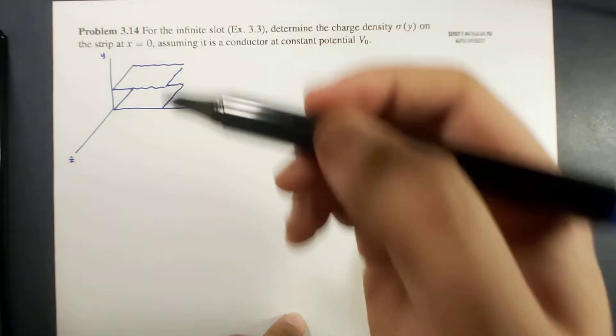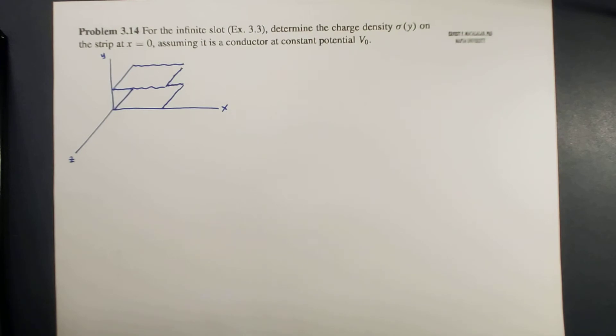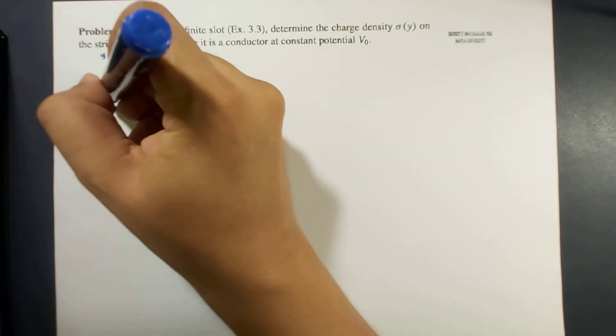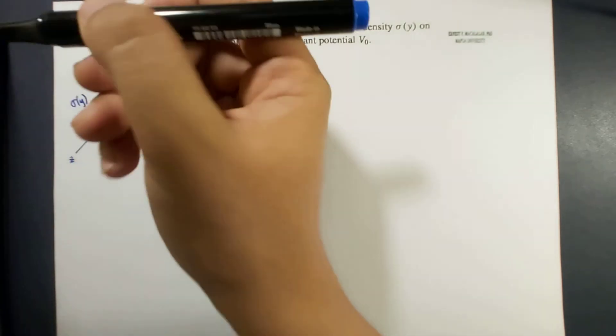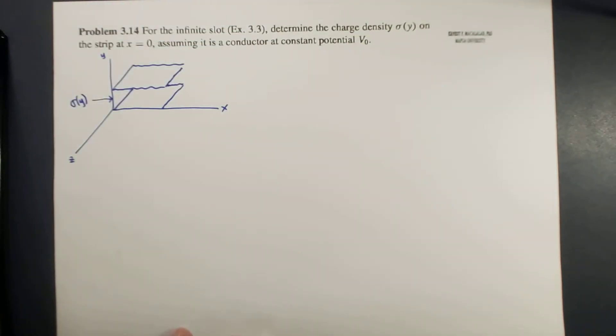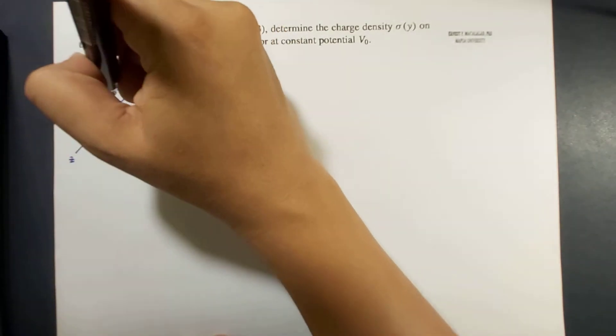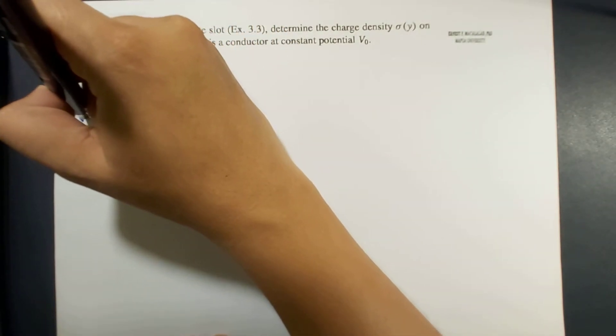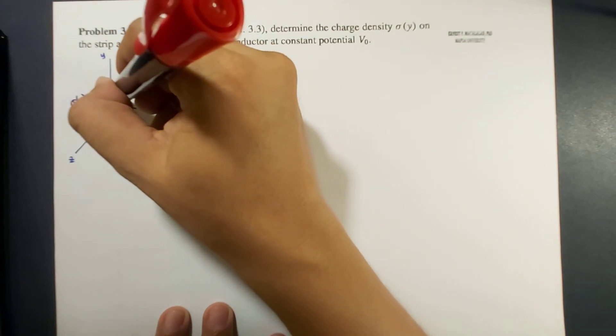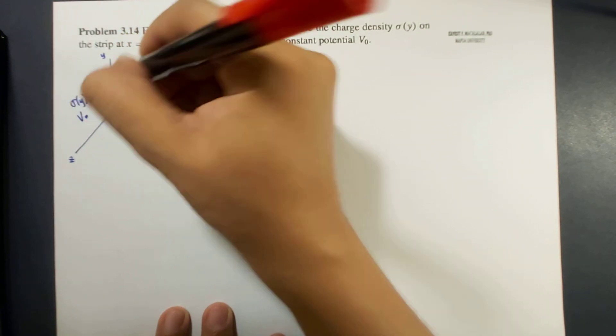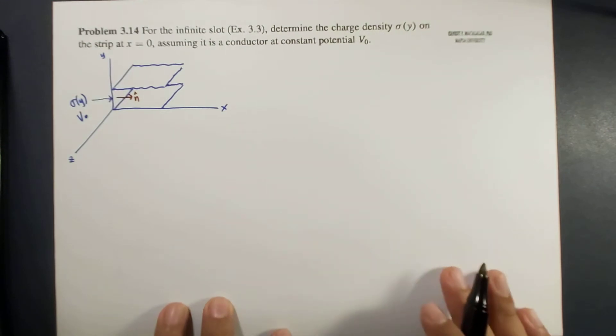Okay, so at x equal to 0, the charge density varies with y. Okay, so here, it is important to take note that the normal direction we set is this direction. This is our normal direction.